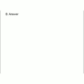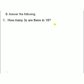Section B: Answer the following. First one: how many 3's are there in 18? Here we take the 3 times table. When does 18 come in the 3 table? 3 sixes are 18, so the answer is 6.